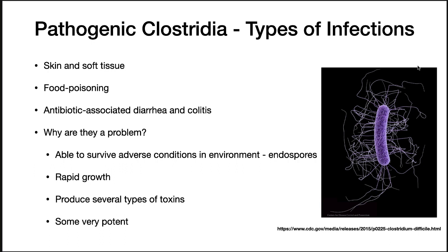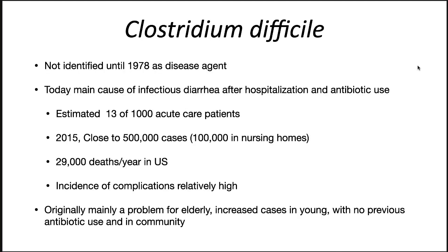Tetanus toxin and botulinum toxin are lethal to humans with nanogram quantities able to kill. In fact, they are some of the most deadly poisons known. Clostridium difficile is probably the pathogen of most importance at this time.